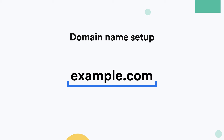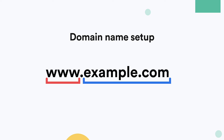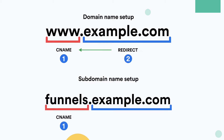If you want to use your main domain, you will need to add the www part to it. The way we do that is by going to the DNS settings of the domain name and then adding a record called a CNAME. To set up www.example.com, we first create a CNAME. Then the second step is to redirect all the traffic that goes to example.com to www.example.com. We will see how to do this in some of the most popular domain name companies.